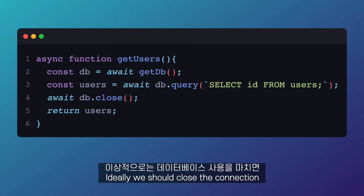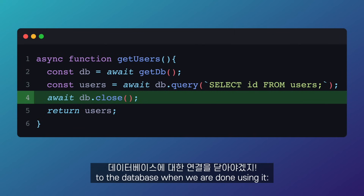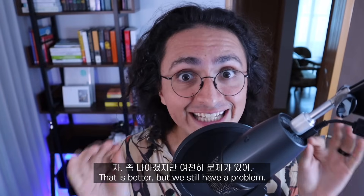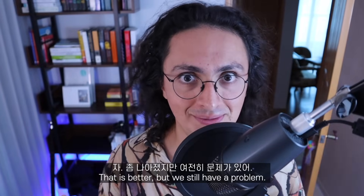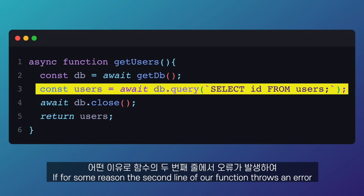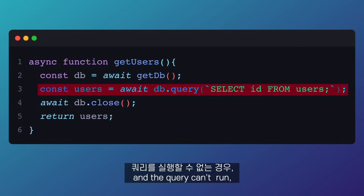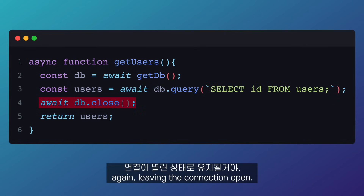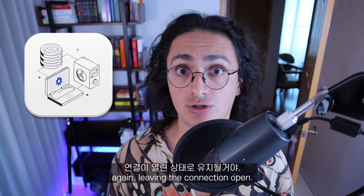Ideally, we should close the connection to the database when we are done using it. That is better, but we still have a problem. If, for some reason, the second line of our function throws an error and the query can't run, the code that is closing the connection to the database will never run, leaving the connection open.